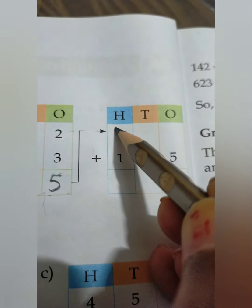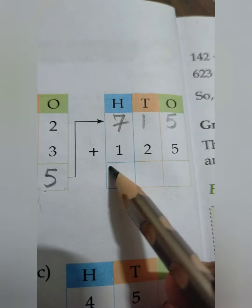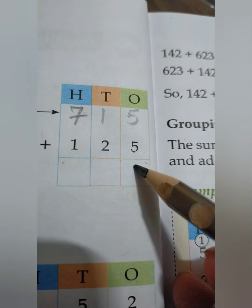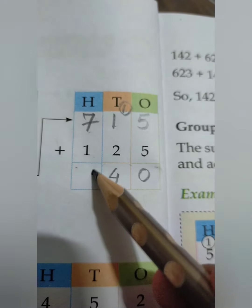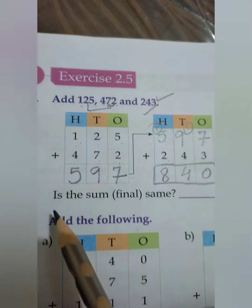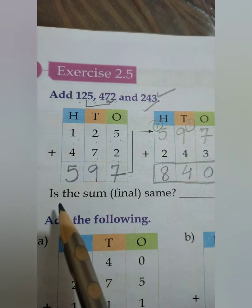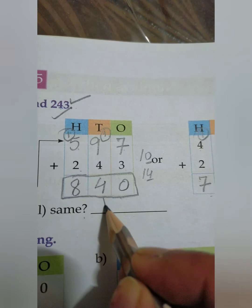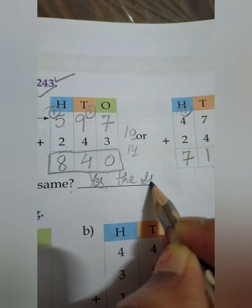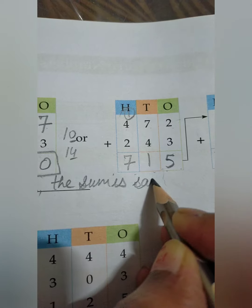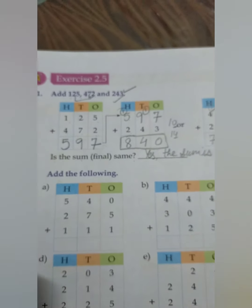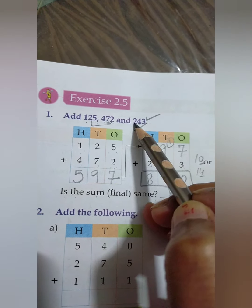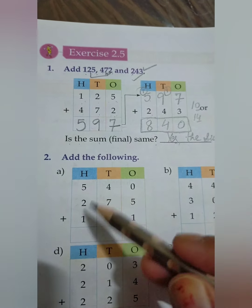1 plus 4 is 5, and 2 plus 2 is 7 — we got 715. Now 715 is carried forward because we have to add one more number, 125. We get 840 in both cases — the same sum. The sum is same, and that is 840. Whenever three numbers are given for addition, we can add two first and then the third, or add them all together.